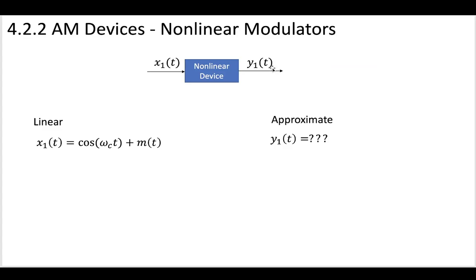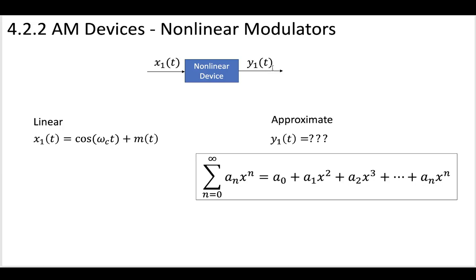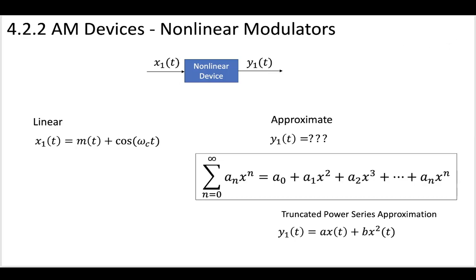So let's think about how we could approximate this y1(t) where x1, which is our cosine plus our message, passes through a nonlinear device. From the Wikipedia article, we know it should be this infinite summation with some coefficients multiplied by some x, which is your variable. So for us, let's say that our truncated power series approximation, let's just deal with the first two terms. We'll be able to understand our process most simply by just considering the first two terms instead of dealing all the way out to n. So we'll say that our truncated power series approximation can be accounted for by dealing with the first two terms: a times x(t) plus b x squared of t.